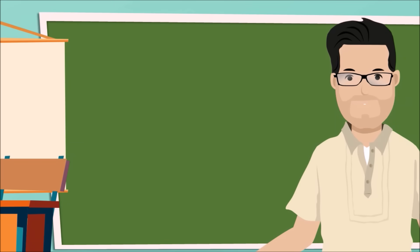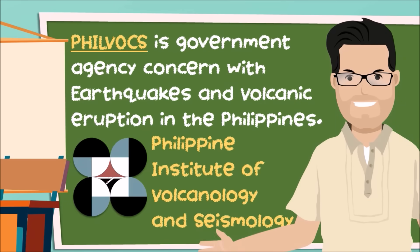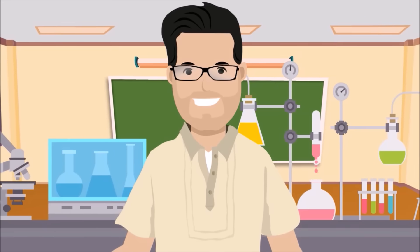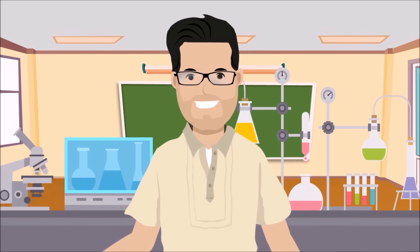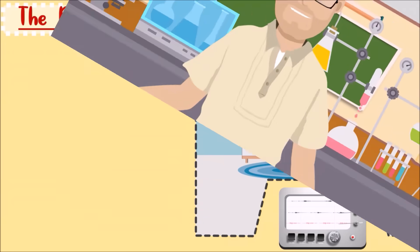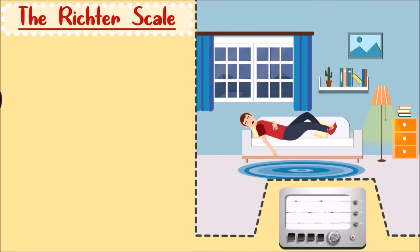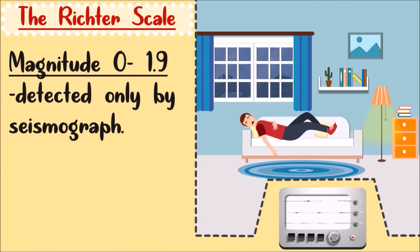Here in the Philippines, the government agency responsible for this kind of matter is PHIVOLCS, an acronym that stands for Philippine Institute of Volcanology and Seismology. On the Richter scale, if the magnitude ranges from 0 to 1.9, people can never feel it because it can be detected only by a seismograph.